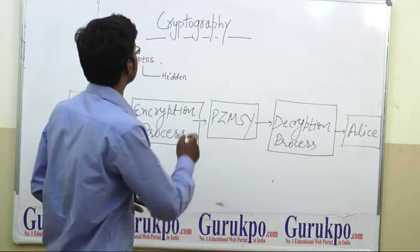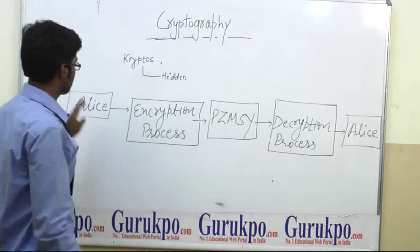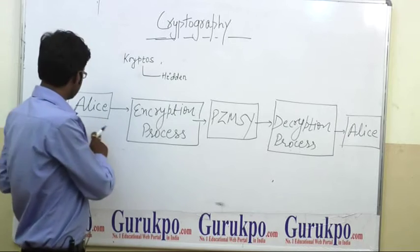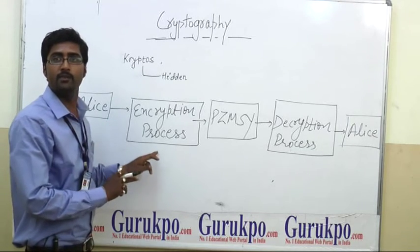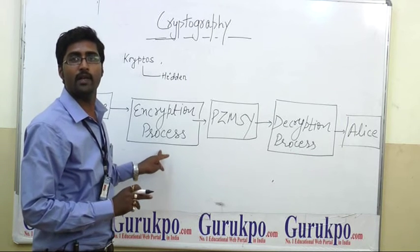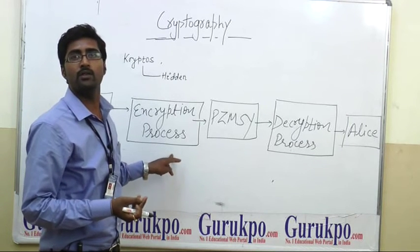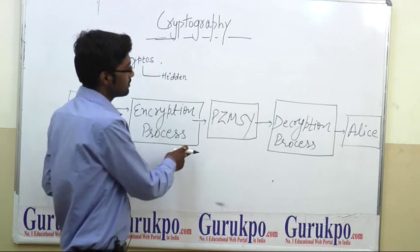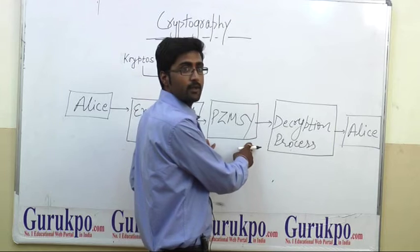Now how does the cryptography mechanism work? First, in plain text — for example, 'ALIC' is a plain text — it is encrypted by the use of an encryption algorithm. The encryption algorithm may be RSA algorithm or DSA algorithm. After being encrypted, it generates ciphertext.